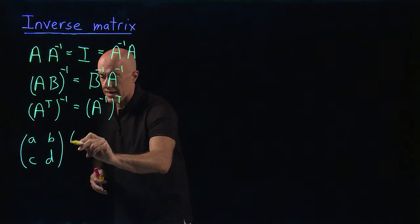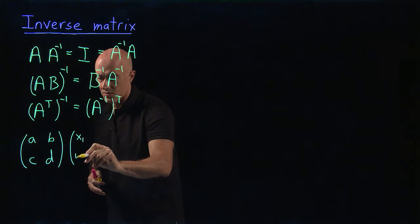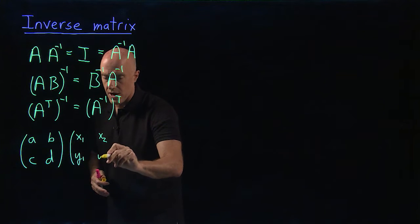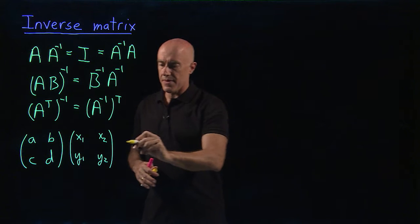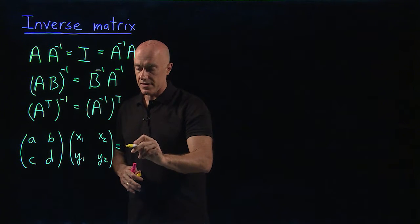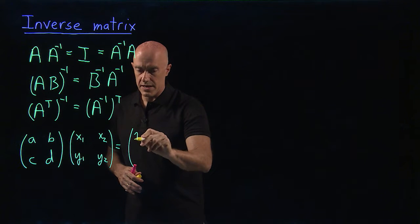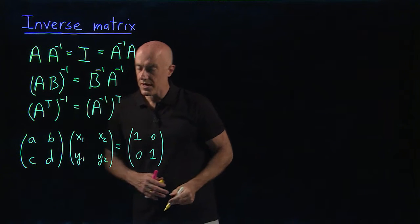So let me write that as the first column I'll write as x1, y1. And the second column I'll write as x2, y2. And that's supposed to be the identity matrix. So let me write that out. That's supposed to equal 1, 0, 0, 1.